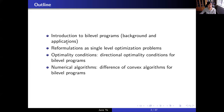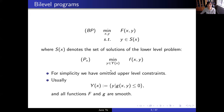Here is the outline of my talk. First, I'll give an introduction to bi-level programs with background and applications. Since to give optimality conditions or solve a bi-level problem you always have to reformulate it as some kind of single-level problem, I will talk about a few reformulations. Then I will talk about optimality conditions, focusing on a new one called directional optimality conditions. Finally, for numerical algorithms I will present the difference of convex algorithm.